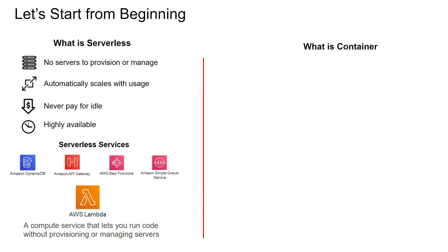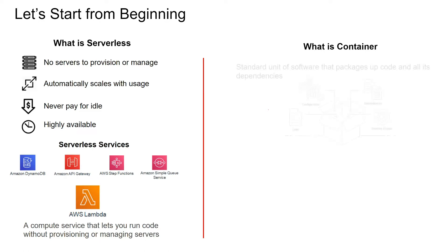Let's take a look at what is a container. A container is a standard unit of software that packages up code and all its dependencies. As you can see in this diagram, the configuration, the actual code, the runtime engine, and dependencies are all packaged into a software unit, which is called Docker. And when you instantiate that Docker into an instance, that's what we call a container.